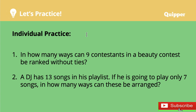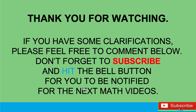I'm done with my discussion for today. Now I want you to answer these two problems under individual practice and please comment your answers below so that I can check if your answers are correct. For number 1: how many ways can 9 contestants in a beauty contest be ranked without ties? For number 2: a DJ has 13 songs in his playlist — if he is going to play only 7 songs, in how many ways can this be arranged? Please comment your answers below. That's all for today, thank you for watching.